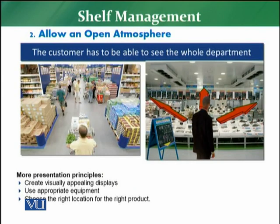The second principle is about allowing an open atmosphere. The objective of the retailer is to create an open atmosphere so that the customer is able to see the whole department at once. Research studies say that if the store is positioned such that the customer can see the whole store in one glance, that is an ideal situation, as the customer will have a very strong experience.